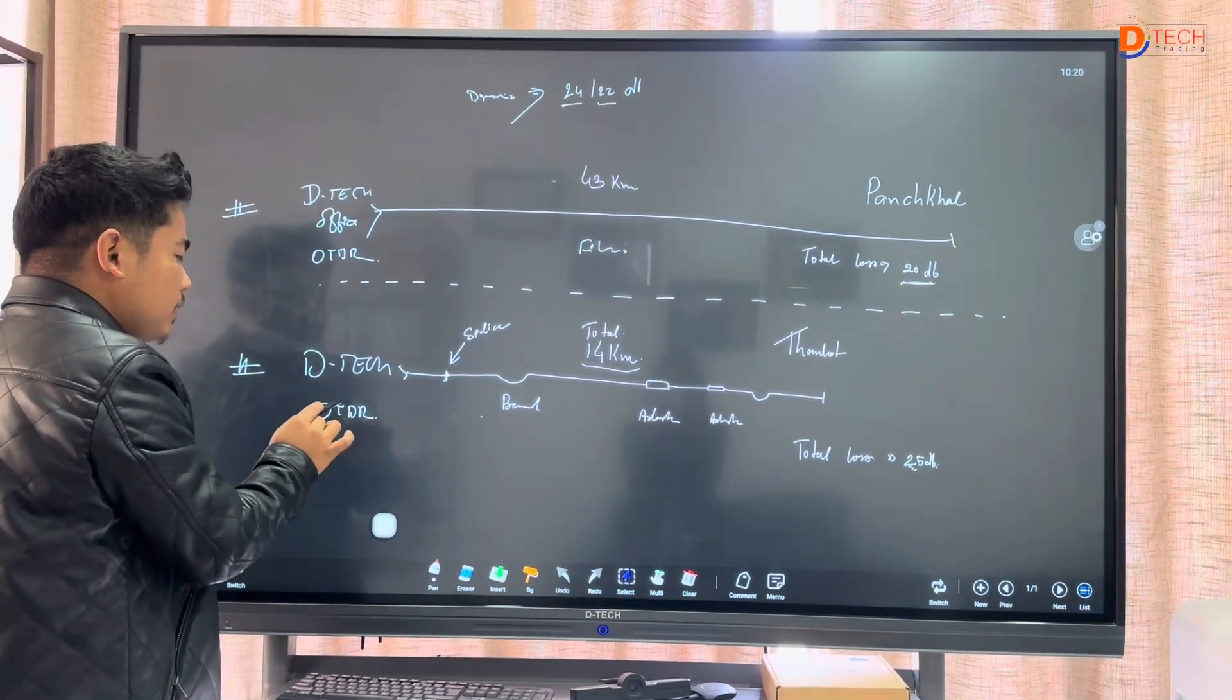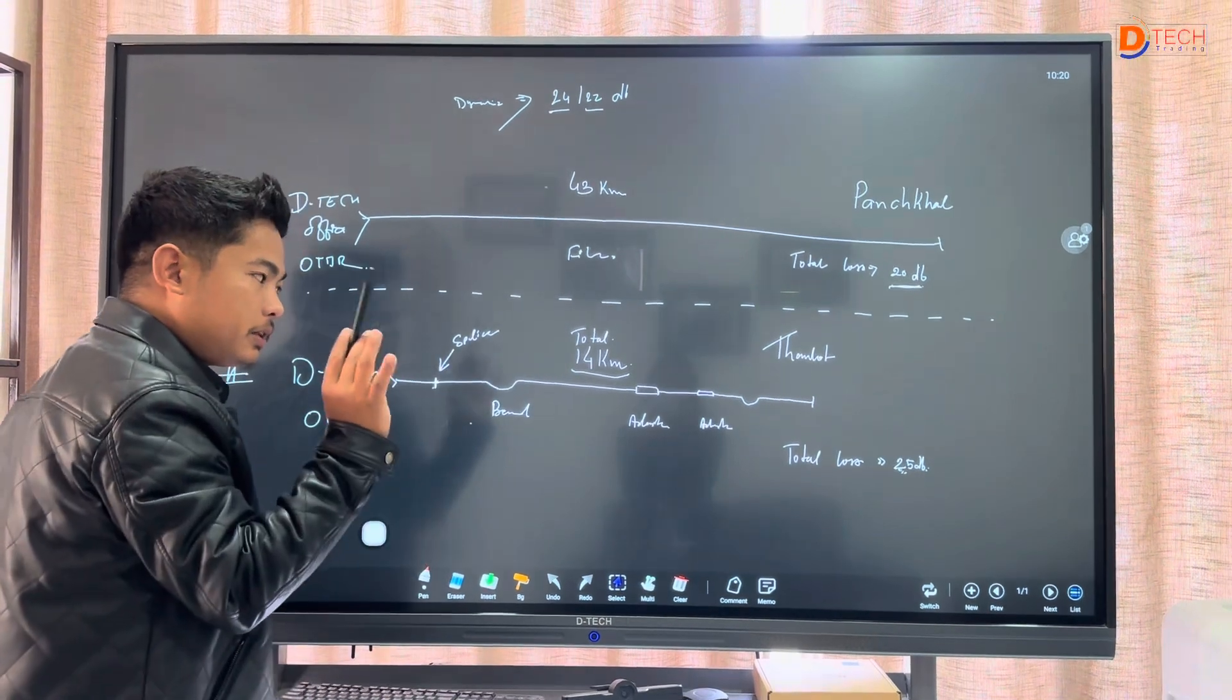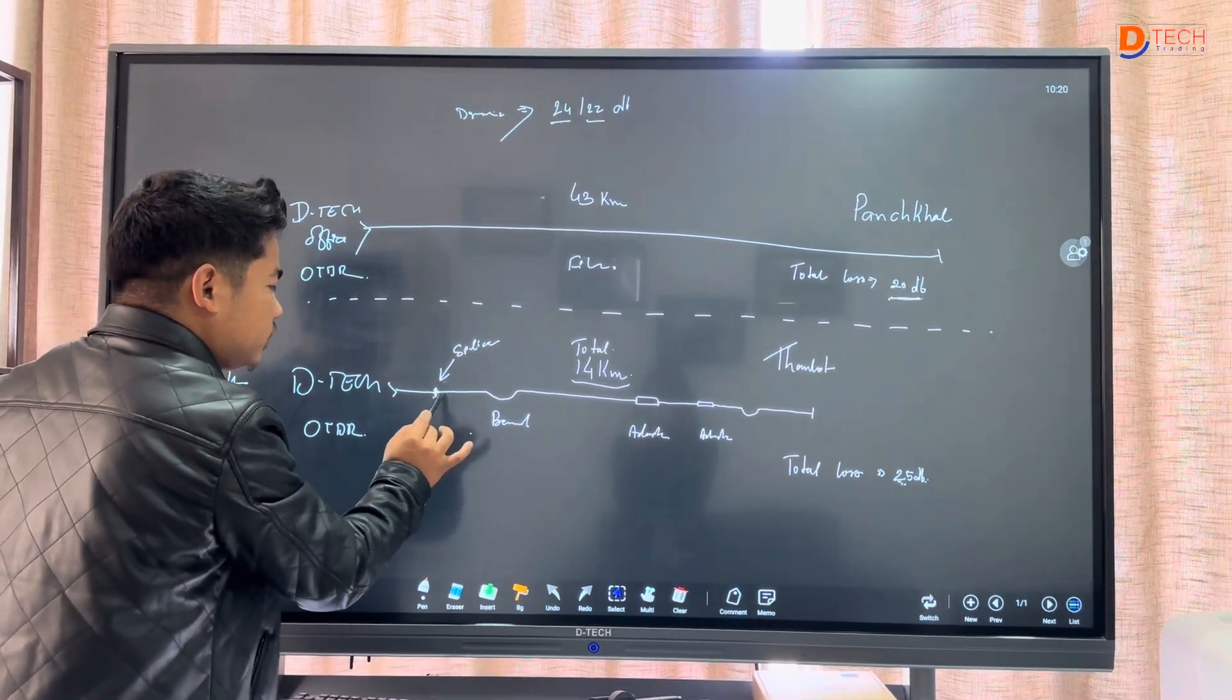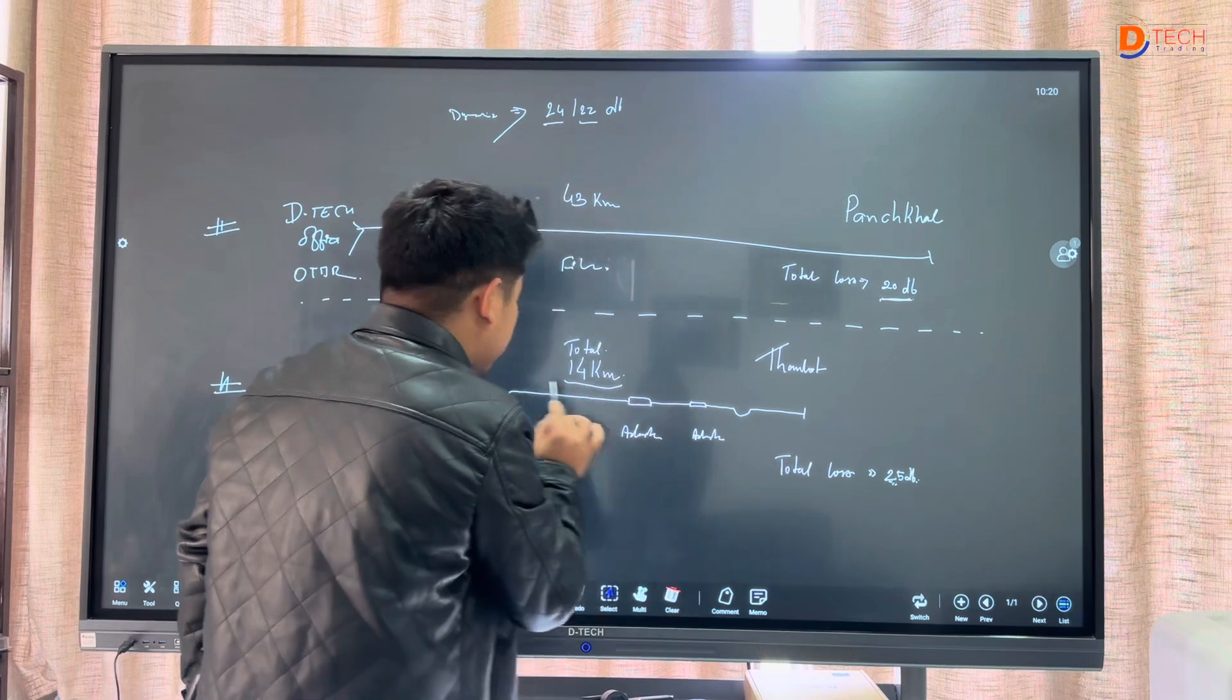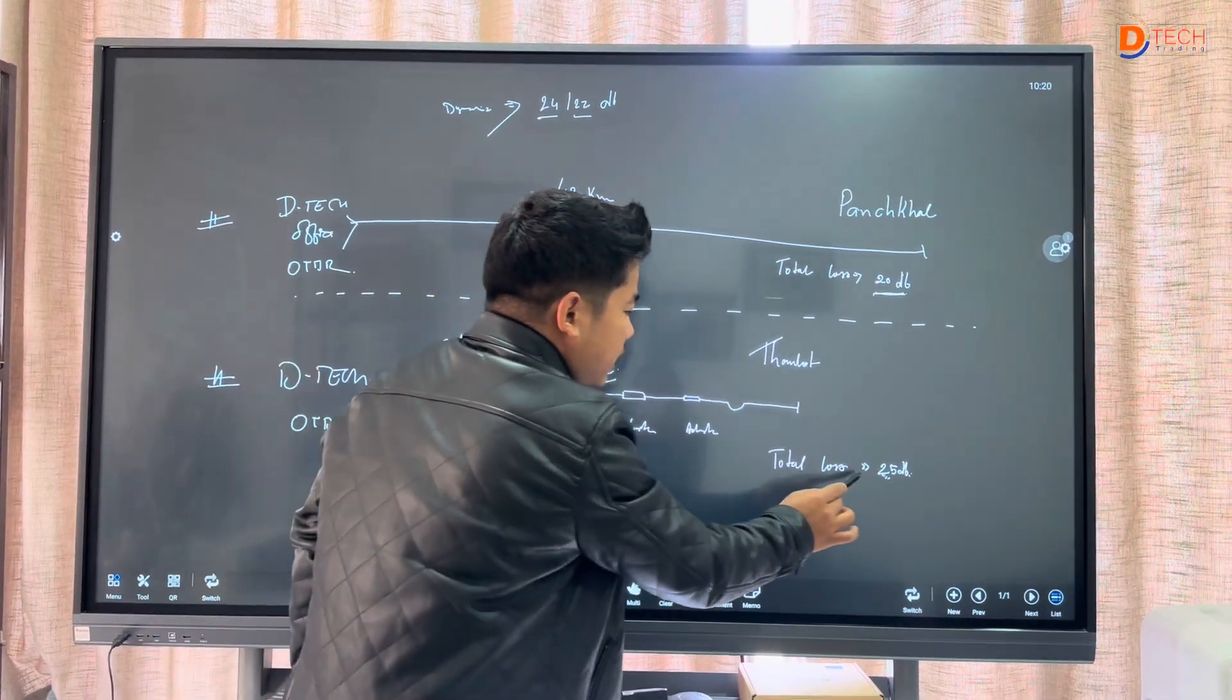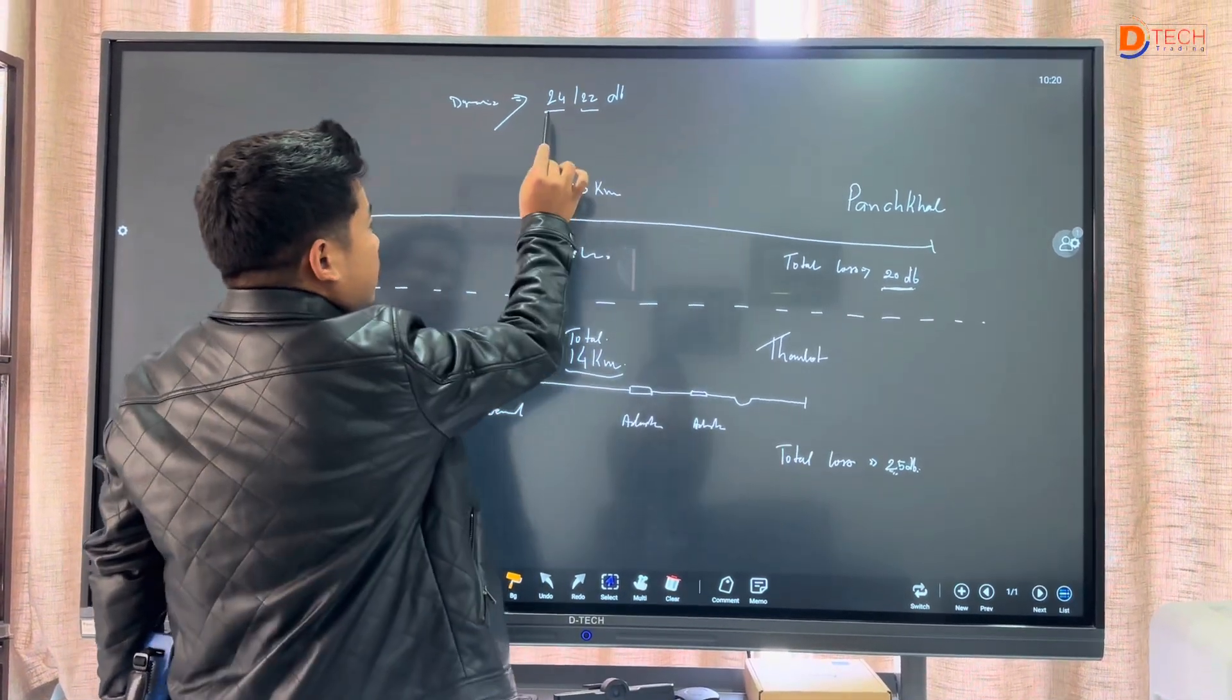Let me show you this model. The total distance is 64 meters. You can see the position between joining and bending points. The device measures fiber loss, splice loss, and bending loss. Everything is defined by the dynamic range.